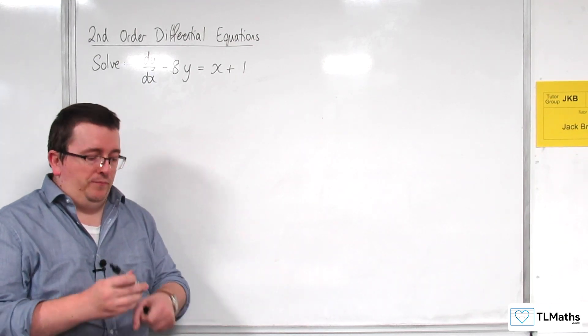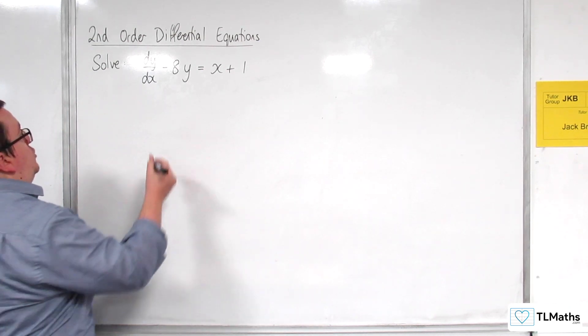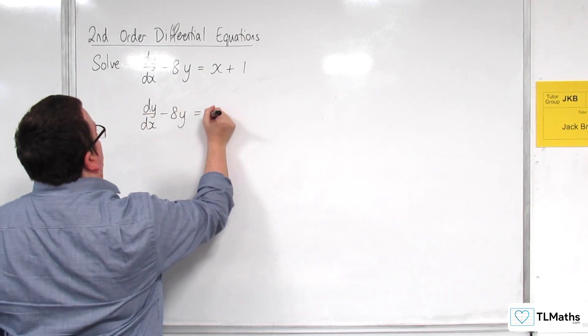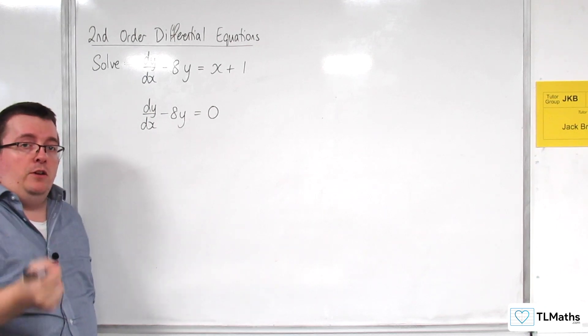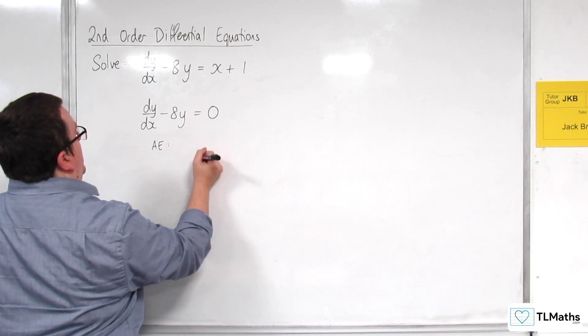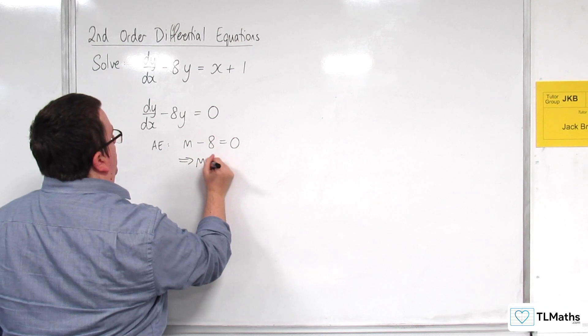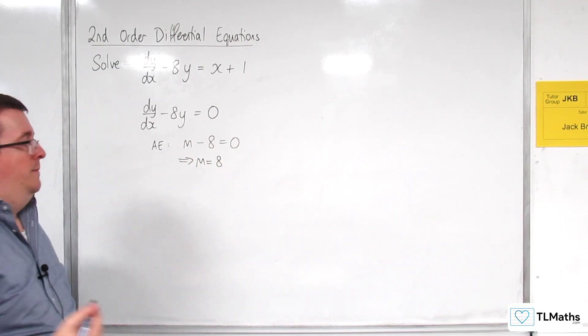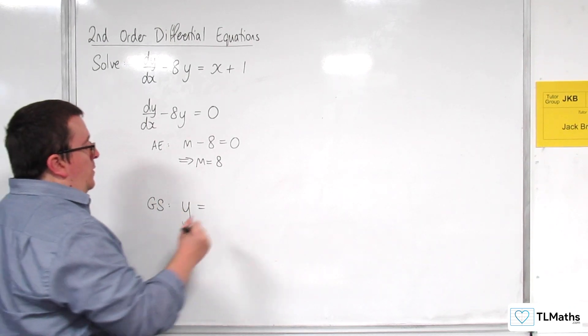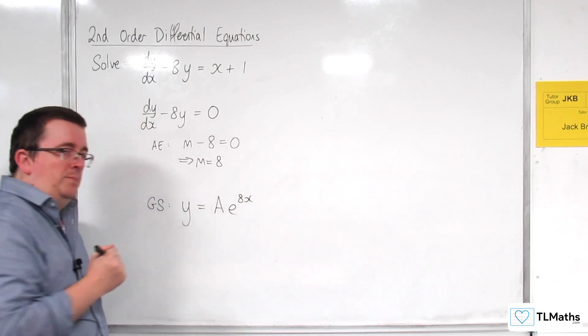So, first things first, we consider the homogeneous case, the homogeneous equation. So that would be dy by dx take away 8y is equal to 0. Now, we can use the auxiliary equation here. So the auxiliary equation would be m take away 8 is 0. So m is equal to 8. So that is telling me that the general solution has y is equal to Ae to the 8x, as part of it.